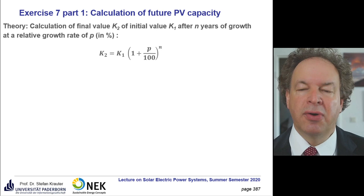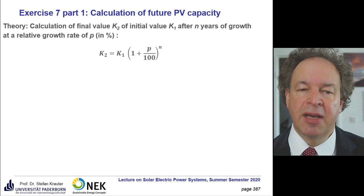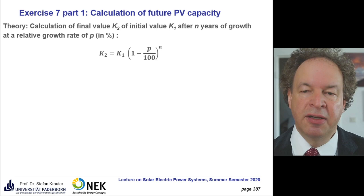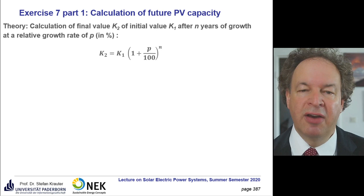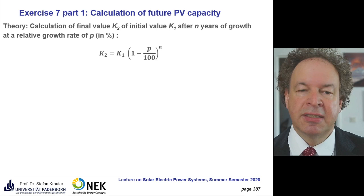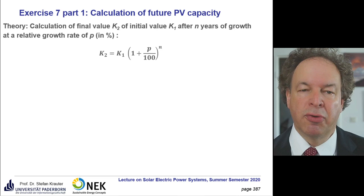If you want to calculate the final value of our initial value after n years of growth and we have a relative growth rate of P in percent, we have the following formula: K2 equals K1 times (1 plus percentage rate divided by 100) to the exponent n. For example, if you have to pay some debt and you have an interest rate of 3%, you have from an initial value of 100 euros times 1.03 to the power of the number of years — for example, 2 years gives you 1.03 squared.